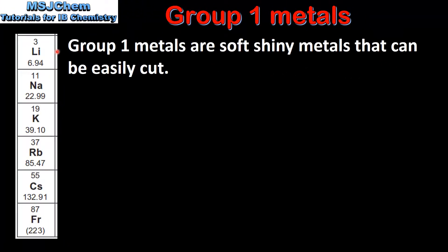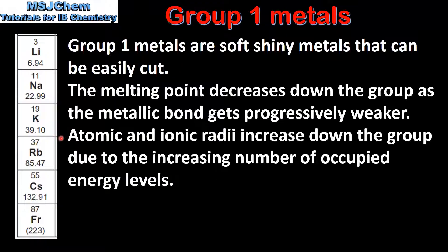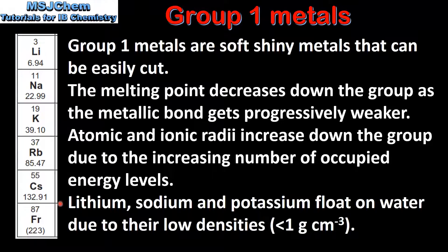Next we look at the physical properties of the group 1 metals. Group 1 metals are soft shiny metals that can be easily cut. The melting point decreases down the group as the metallic bond gets progressively weaker. The atomic and ionic radii increase down the group due to the increasing number of occupied energy levels. The first three members — lithium, sodium, and potassium — float on water due to their low densities.